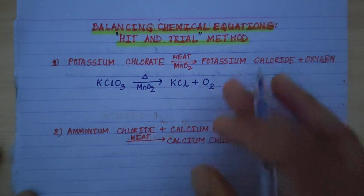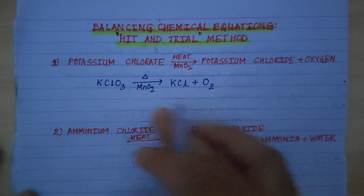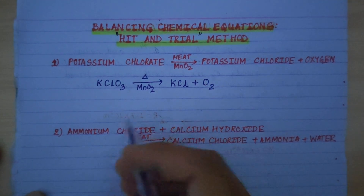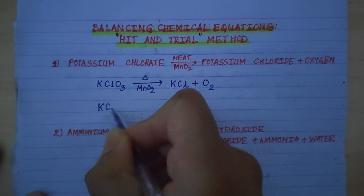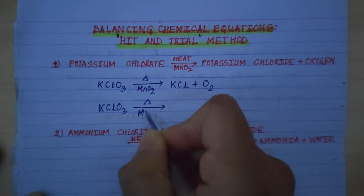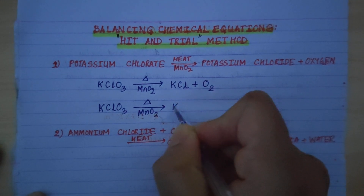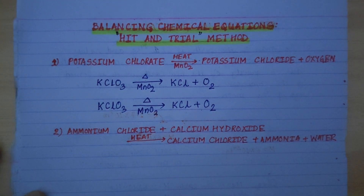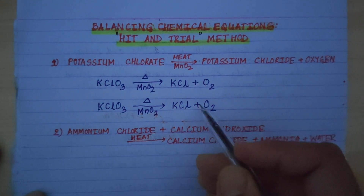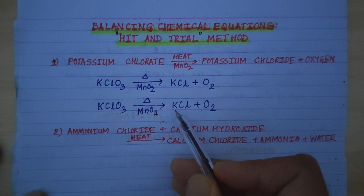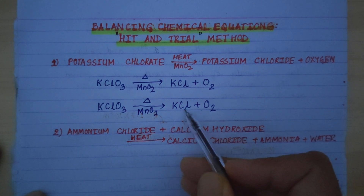Now we are going to balance this. In the second step we can do the balancing. Let's count atoms on each side. KClO3 heated in presence of MnO2 gives KCl plus O2. On the reactant side, potassium is 1; on the product side, potassium is 1 — potassium is balanced. Chlorine on KClO3 is 1; on KCl is 1 — chlorine is balanced.